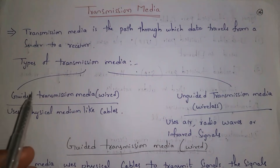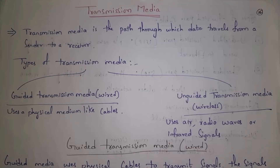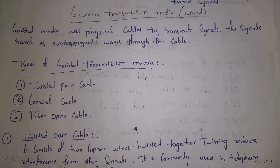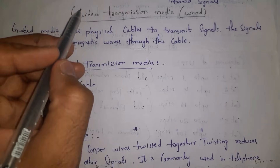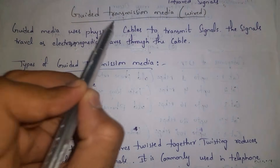If you connect devices using a physical medium like cables, we call it guided transmission media. If we connect a device using wireless — like air waves, radio waves, or infrared waves — we call it unguided transmission media. Guided media uses physical cables to transmit signals.